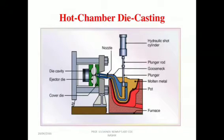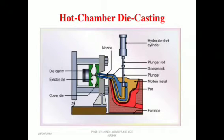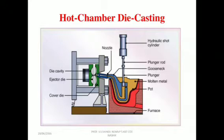The plunger pushes the molten metal through the gooseneck and the nozzle into the die cavity, where it is held under pressure until it solidifies. The die then opens and the cores, if any, retract. The casting remains in one die half — the ejector side — and the ejector die ejects the total casting product.